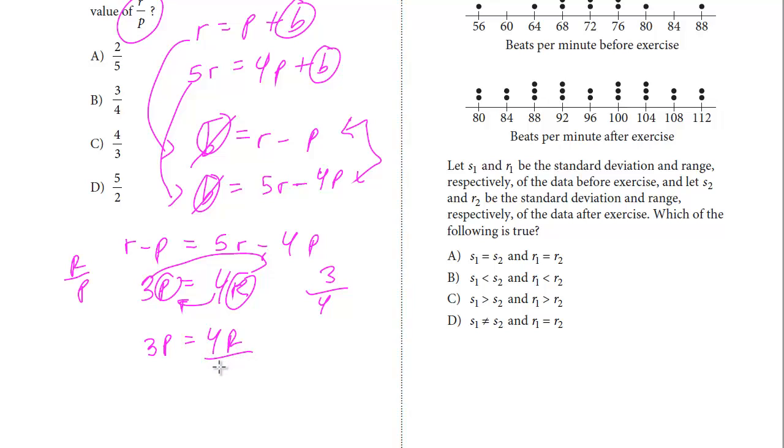What we can do is divide both sides, in this case, by 4P. Because then we get R over P, which we're looking for.